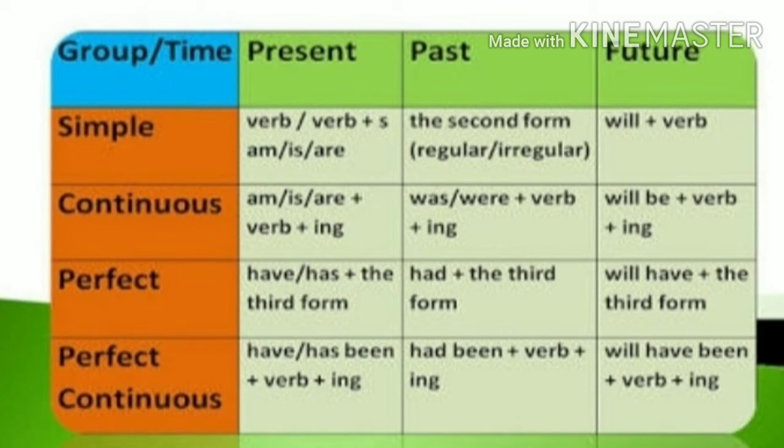There is a table you have to memorize to identify which tense a sentence is in. For present, we write the verb with 'is' or 'are.' For a single person we write the verb with 's' — that is the plural form. For more than one person we write the simple form of the verb along with 'is' or 'are.' For simple past we write the second form of the verb, and for future we write 'will' plus the verb. For present continuous we write 'is,' 'am,' or 'are' with the verb plus 'ing.'